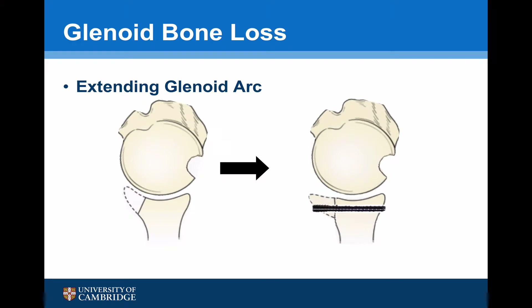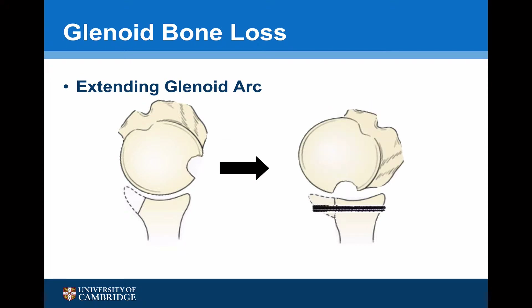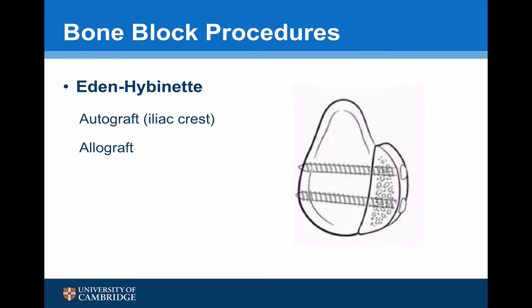The rationale of the bone block procedure is essentially to extend the glenoid arc, so as the arm comes into abduction and external rotation, the Hill-Sachs lesion no longer engages with the front of the glenoid. The most commonly performed bone block procedures are variations of the Eden-Hybinette procedure.